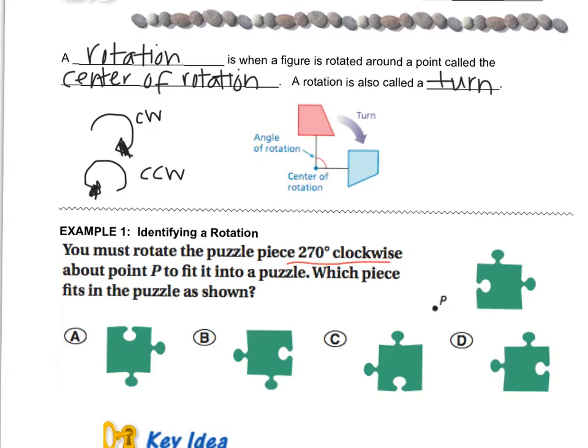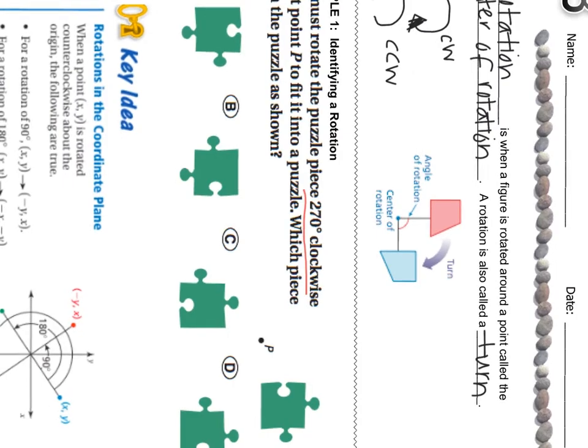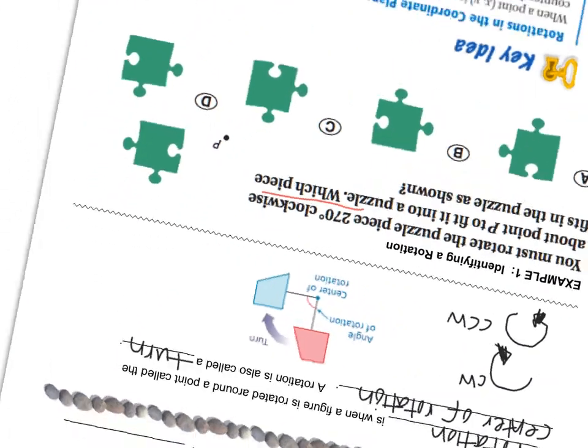Let's turn our paper 270 degrees clockwise. So we've got 90, 180, 270.